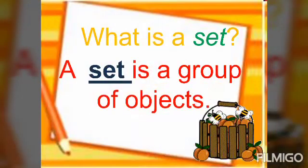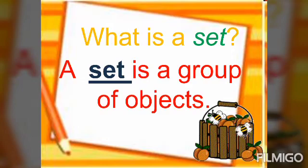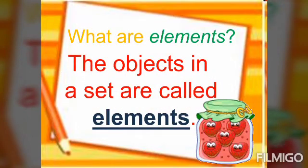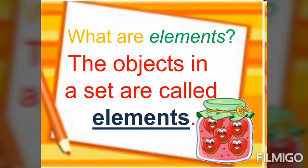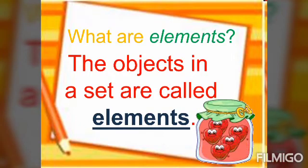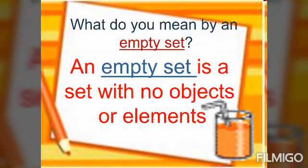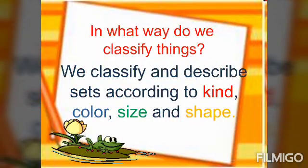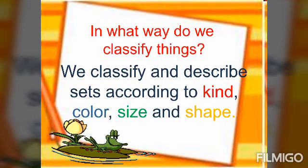What is a set class? A set is a group of objects. What are elements? The objects in a set are called elements. What do you mean by an empty set? An empty set is a set with no objects or elements. In what way do we classify things? We classify and describe sets according to kind, color, size, and shape.